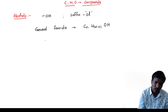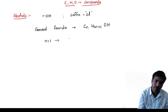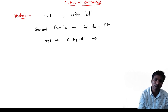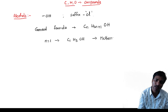For example, if N is equal to 1, then you will get C₁H₃OH — that is CH₃OH. The number of carbon atoms is 1, so the first part of the name is 'meth.' It is methanol, or methane alcohol, or methyl alcohol.